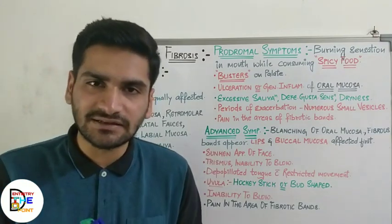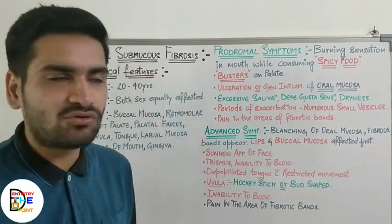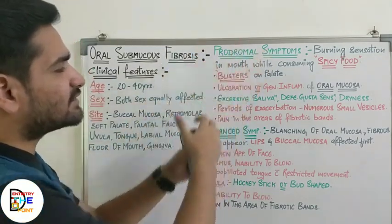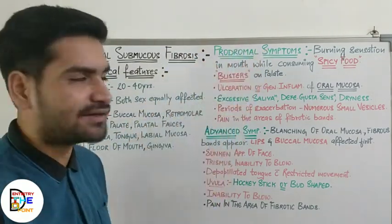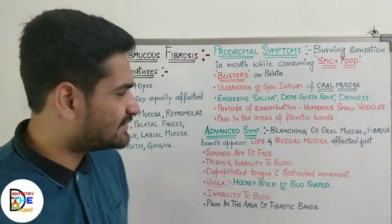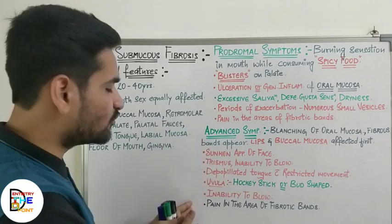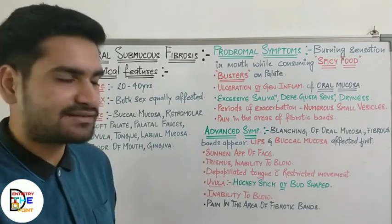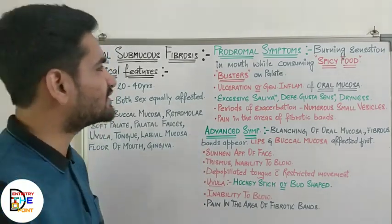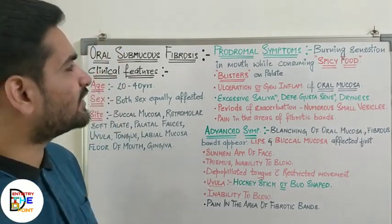The clinical presentation of this disorder is divided into two parts: first are the prodromal symptoms, which are the initial symptoms the patient presents with during the early course of the disease, and then the advanced symptoms, which appear as the disease becomes more severe.